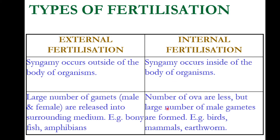In internal fertilization, syngamy occurs inside the body of the organism, generally inside the female body. Fewer ova are released but large numbers of male gametes are formed. Examples include birds, mammals, earthworms, and human beings, where fertilization takes place inside the female body. These are the two types of fertilization.